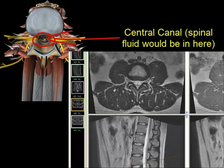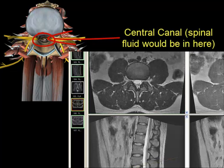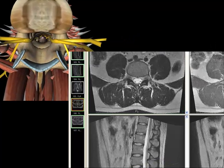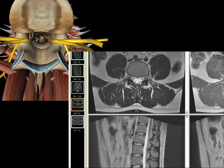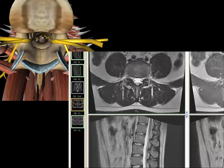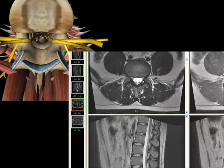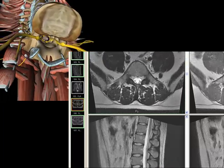This is spinal fluid — the bright part anteriorly. These are the nerve roots down below. As I click on these images and make my way inferior, you can see the pairs of nerve roots make their way toward their neural foramen.